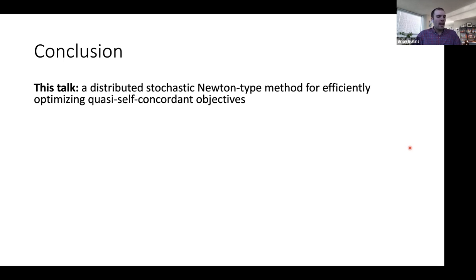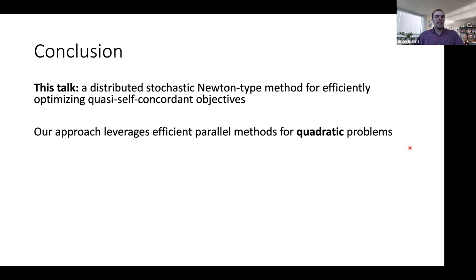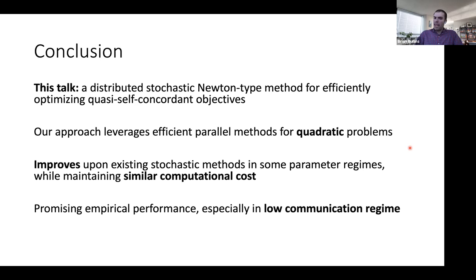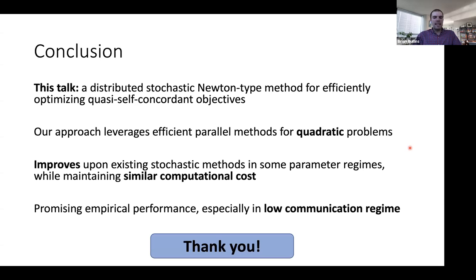To conclude: in this talk we discussed a distributed stochastic Newton method for optimizing quasi-self-concordant objectives. The key insight is how we leverage efficient parallel methods for quadratic problems. Our method improves upon existing stochastic methods in sub-parameter regimes while maintaining similar computational cost. It shows promising empirical performance, especially in the regime of low communication. Thank you.